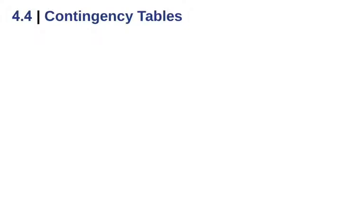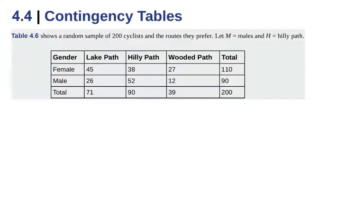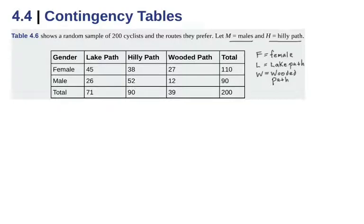In section 4.4, we're going to use these rules of probability in contingency tables. We'll work them out with the formulas first, and then try to do them more intuitively without relying so much on the formulas. Here's a chart. When we collect data from a survey and organize it, a two-way table — what we call a contingency table — is a nice way to organize all of that data. I'll let F be females, L be the lake path, and W be the wooden path.